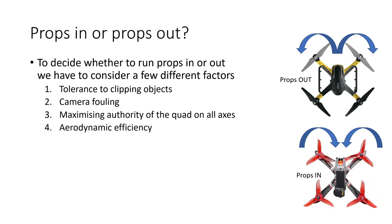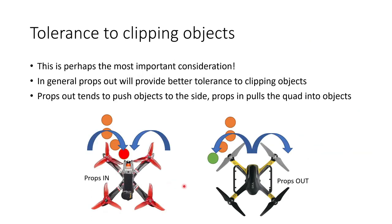Hopefully that makes it easy to follow because it's quite hard to tell sometimes whether a particular picture is showing props in or props out. So, tolerance to clipping objects — this is perhaps the most important consideration for many pilots, particularly racing pilots, and in my opinion props out in general provides a better tolerance to clipping objects. If you're running props in and you have a branch or a race gate coming up straight head-on to a prop, that prop will tend to push it in towards the body of the quad and you'll have a collision with the object. In contrast, if you're running props out, that same object gets pushed to the side a little bit and your quad might just be able to sneak past, just clipping the prop and not actually having a full-on impact with the body of the quadcopter.